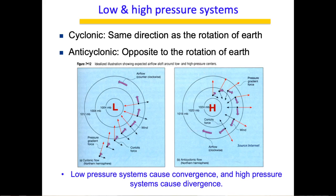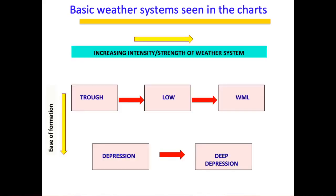The basic weather systems visible on charts, listed in order of increasing strength, are: trough, low, well-marked low (WML), depression, deep depression, and cyclone. A trough has very low strength and is a weak weather system, whereas a cyclone is very strong. Depression and deep depression are also strong systems associated with choppy weather.